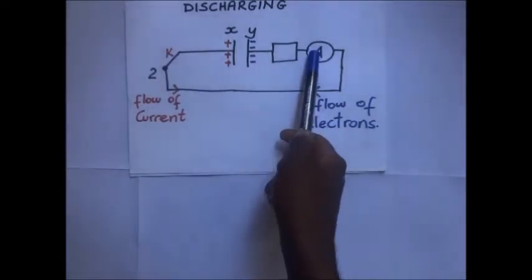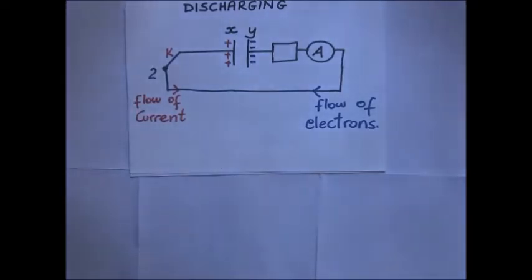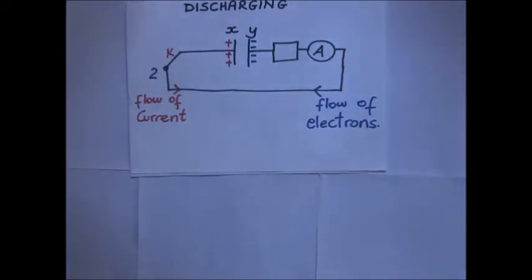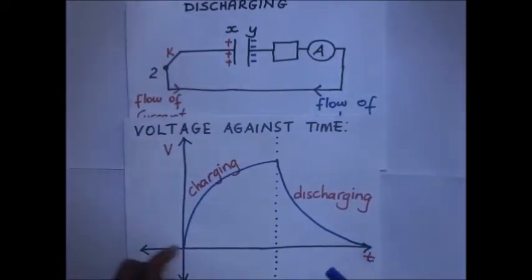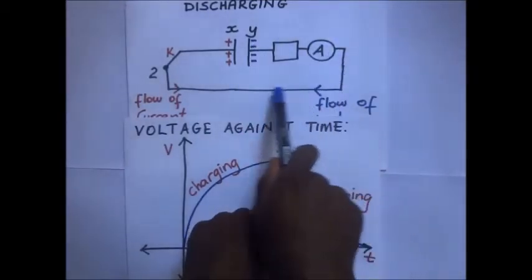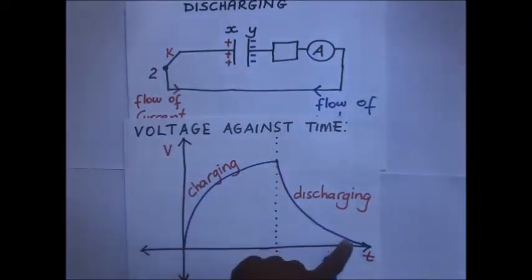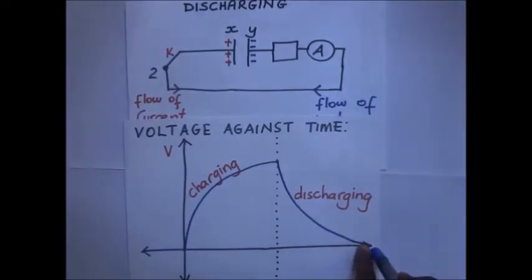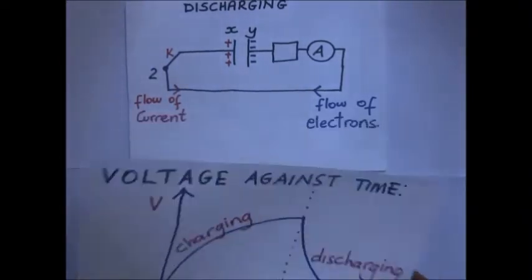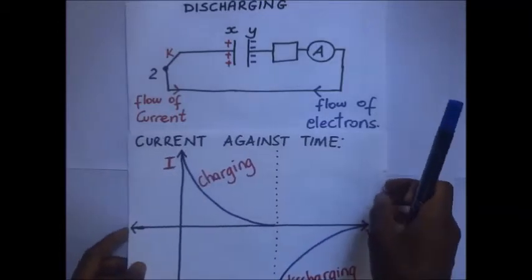As electrons flow from plate Y to neutralize plate X, the potential difference across the capacitor decreases, and the capacitor loses its energy — that is how it gets discharged. The current flowing through the ammeter is high at first when electrons are traveling to discharge the X plate, but as time goes on the current decays to zero, meaning the capacitor has been fully discharged.